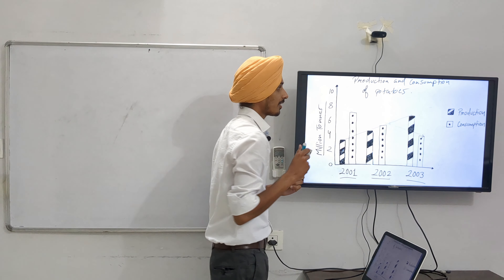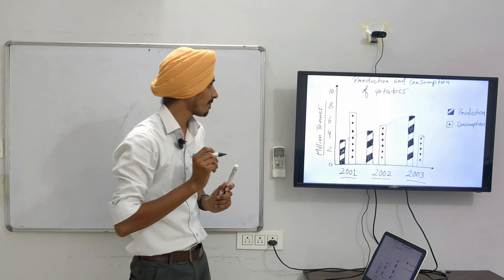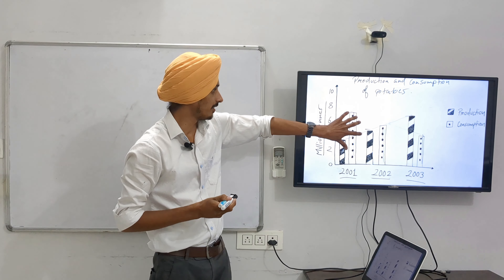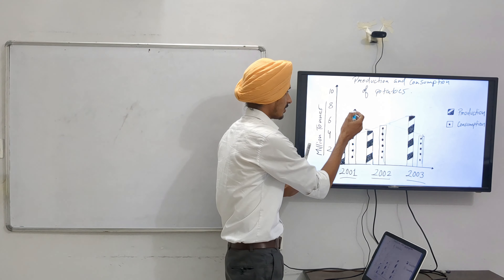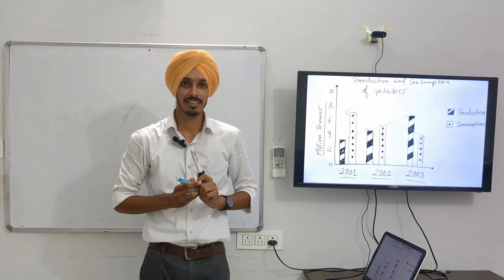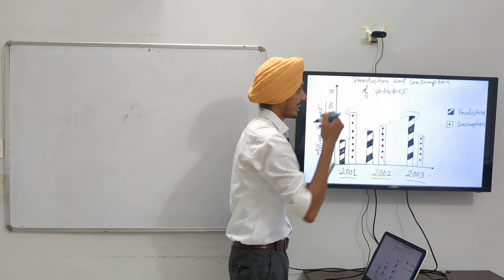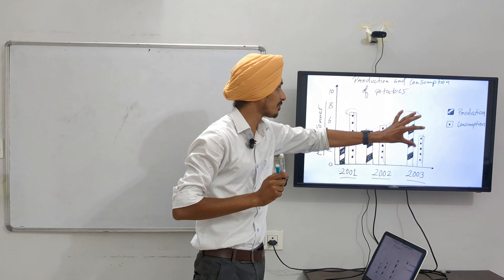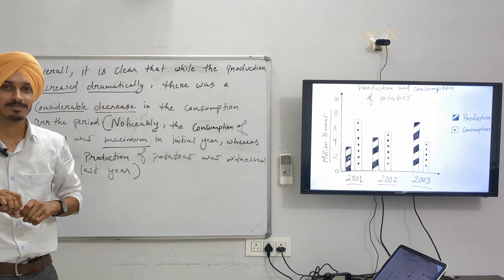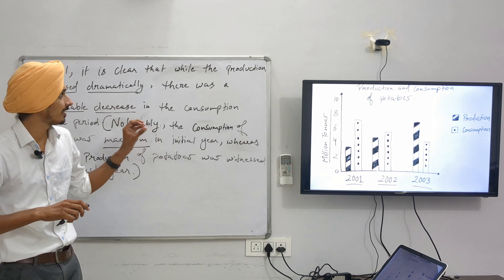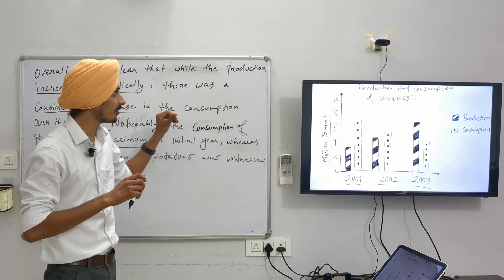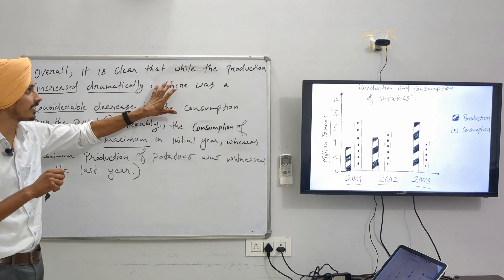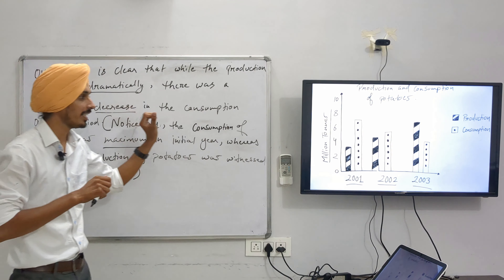We are going to look at whether the production is more or the consumption is more. In this chart, these bars are for consumption while these are for production. This outstanding bar is for consumption — here the consumption is more than the production. While if you look at this, the production of potatoes is higher here. So we are going to make sentences on the production and consumption which is highest in 2001 and 2003. The starting sentence is the one we used in our last video.